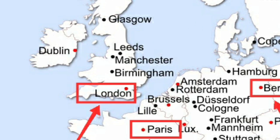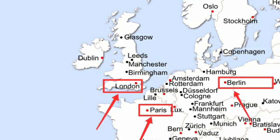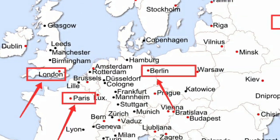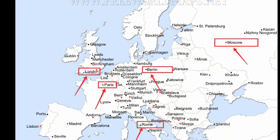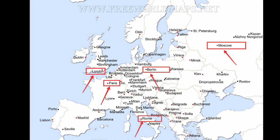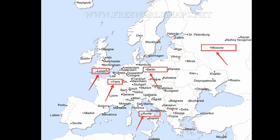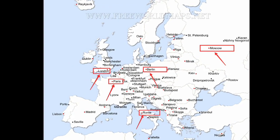All these are capitals of different states of Europe. They all have economic as well as tourist importance in the world. All these are to be marked in your map with the help of black dots — use either a black pencil colour or a black pen.